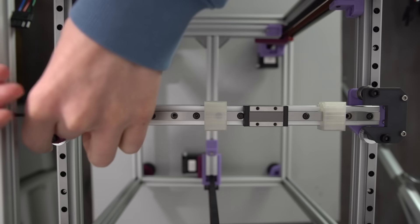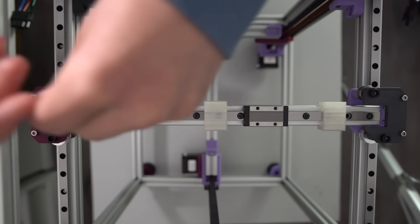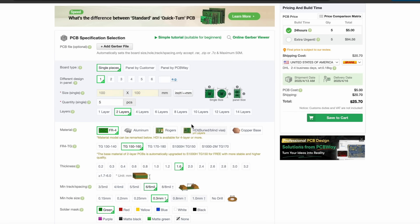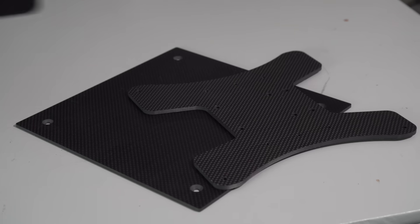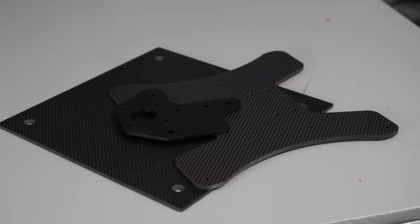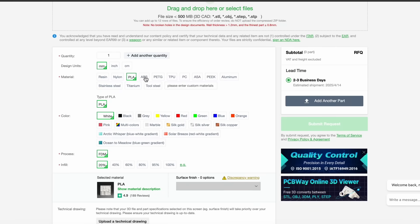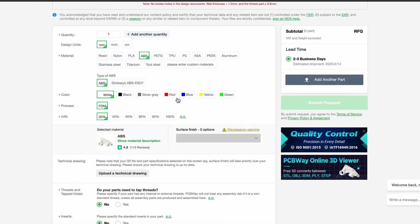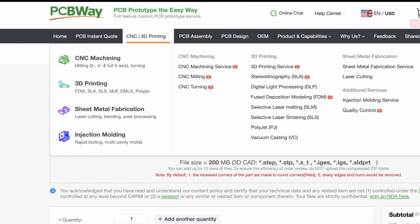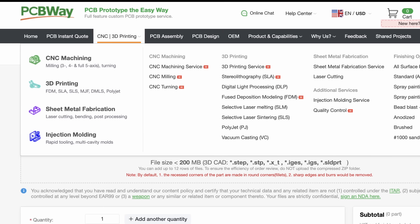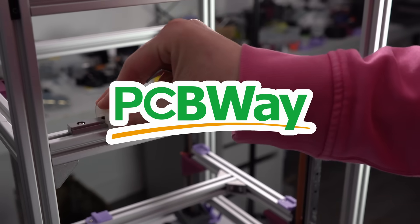Before we carry on with the gantry, I want to take a second to thank the sponsor of today's video, PCBWay. You probably know PCBWay for their top tier PCB manufacturing services, but they also do so much more. I've used their 3D printing, laser cutting, and CNC machining services personally and can vouch for just how high quality they are. If you need parts for your simple core, but don't have access to a 3D printer, PCBWay can hook you up with a wide range of materials, and colors. Perfect for any build. Whether you're an engineer or a hobbyist, PCBWay is a one-stop shop for turning your ideas into real working prototypes. Check out PCBWay using my link below.